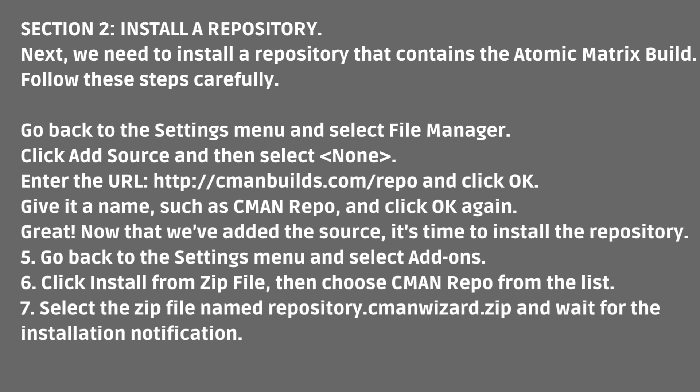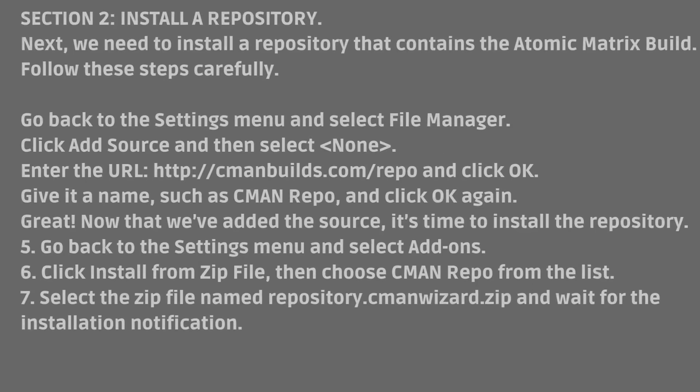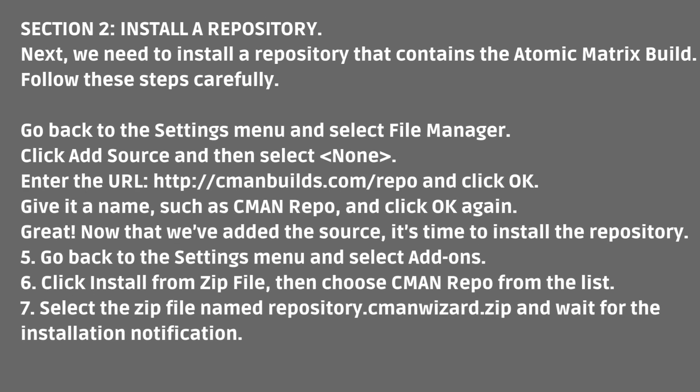Section 2: Install a Repository. Next, we need to install a repository that contains the Atomic Matrix build. Follow these steps carefully. Go back to the settings menu and select File Manager. Click Add Source, then select the "None" field. Enter the URL: cmanbuilds.com/repo and click OK. Give it a name such as Kman Repo and click OK again.